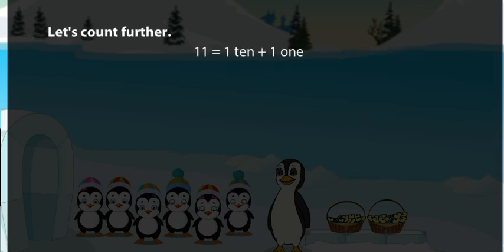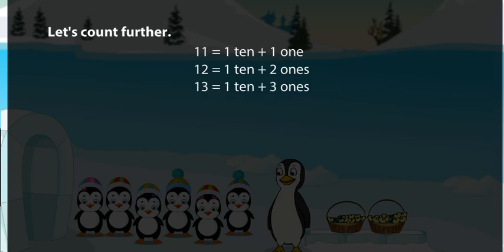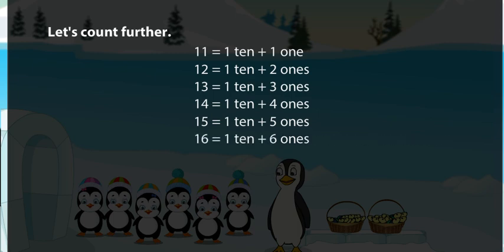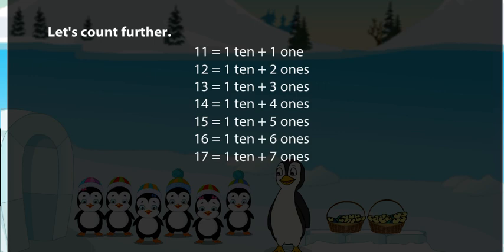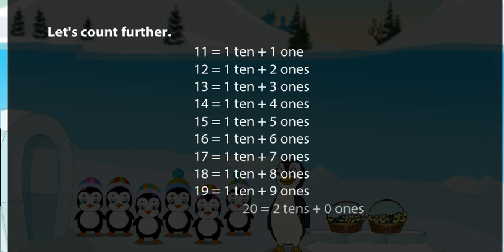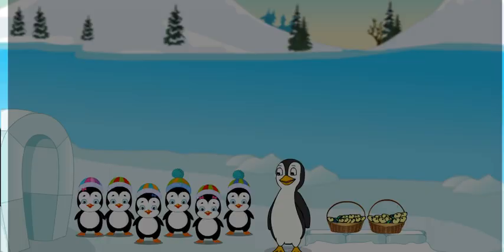Let's count further. Eleven is equal to one ten plus one one. Twelve is equal to one ten plus two ones. Thirteen is equal to one ten plus three ones. Fourteen is equal to one ten plus four ones. Fifteen is equal to one ten plus five ones. Sixteen is equal to one ten plus six ones. Seventeen is equal to one ten plus seven ones. Eighteen is equal to one ten plus eight ones. Nineteen is equal to one ten plus nine ones. Twenty is equal to two tens plus zero ones, or twenty is equal to two tens or twenty ones.